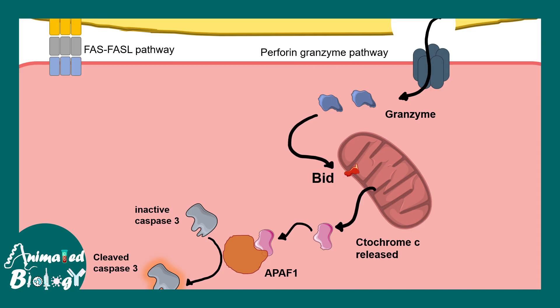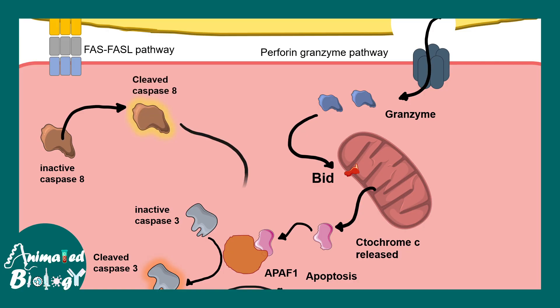Once caspase 3 is activated, the cell's fate is sealed — it initiates destruction of the cell. In parallel, the FasL-mediated pathway activates caspase 8, which also converges on caspase 3 activation. Caspase 8 and others are initiator caspases; caspase 3 is the executioner. By killing the cell, the virus is prevented from spreading to nearby cells.